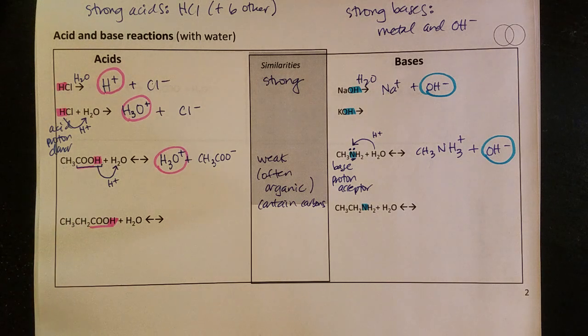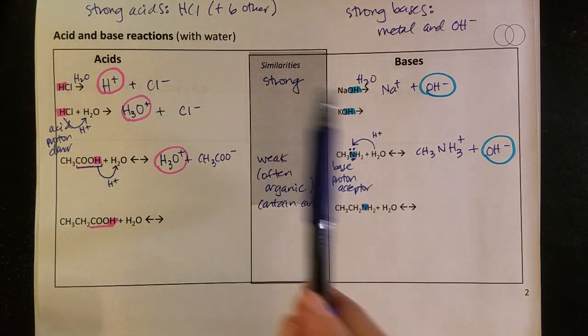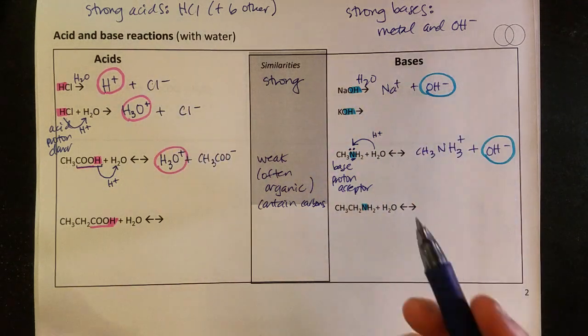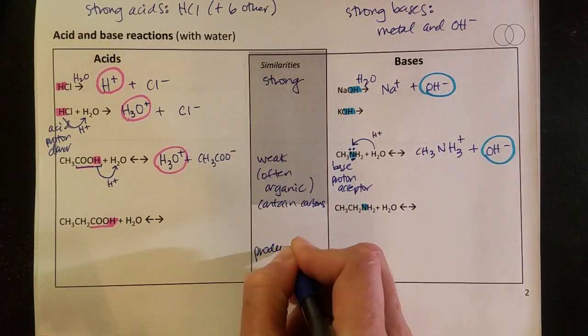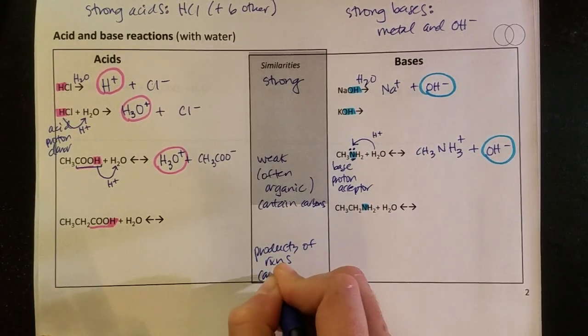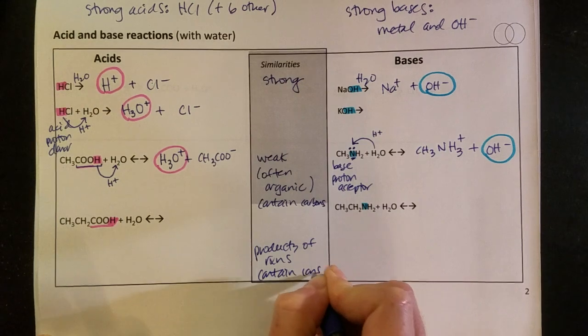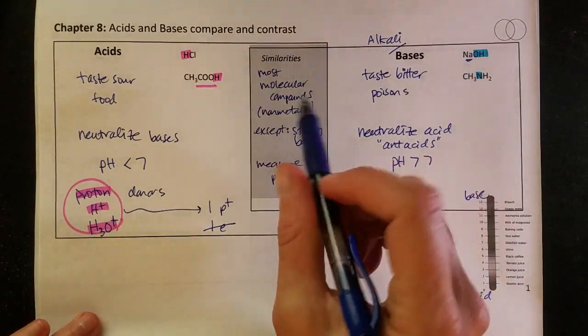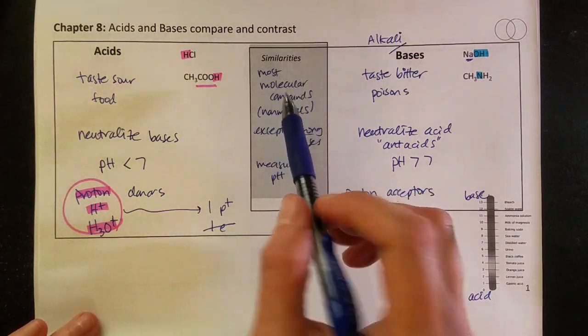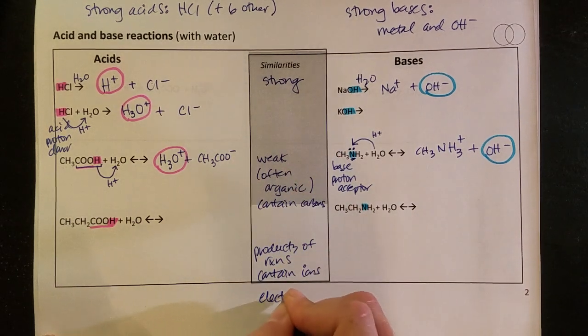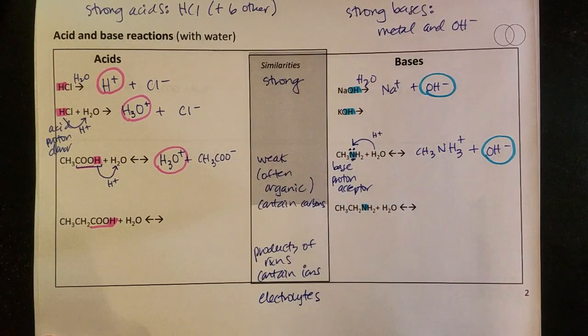Another couple of patterns that we can see here - if you notice all the products here and all the products here, all of the products of these reactions contain ions, which we wouldn't have expected. If you remember back over on the first page, we said they're molecular compounds, which don't have ions in them usually, but all of these produce ions.